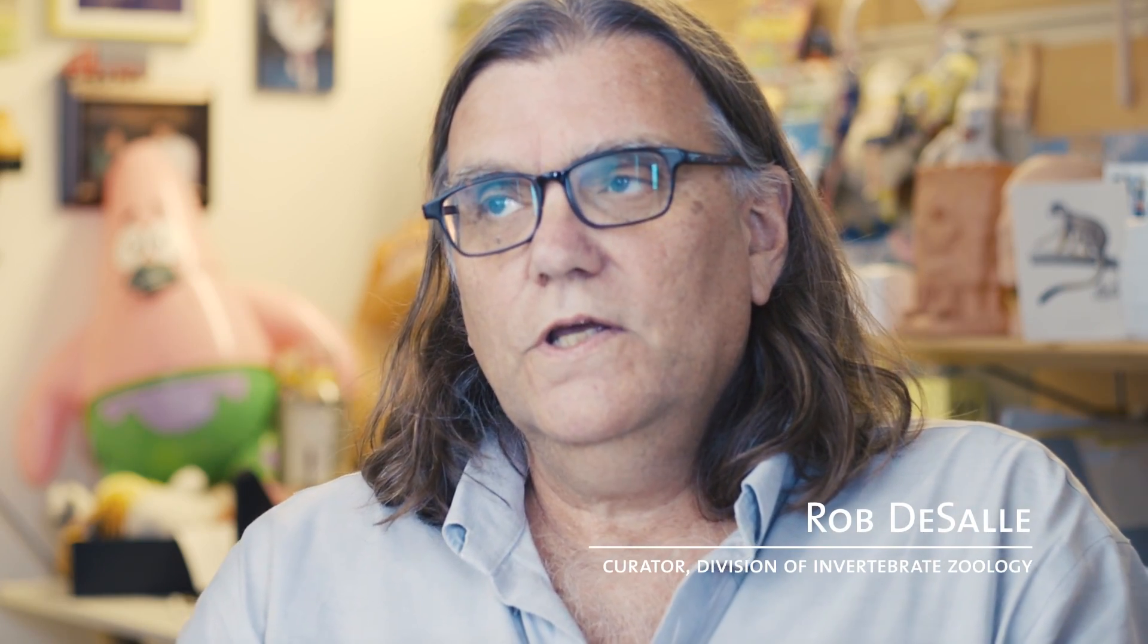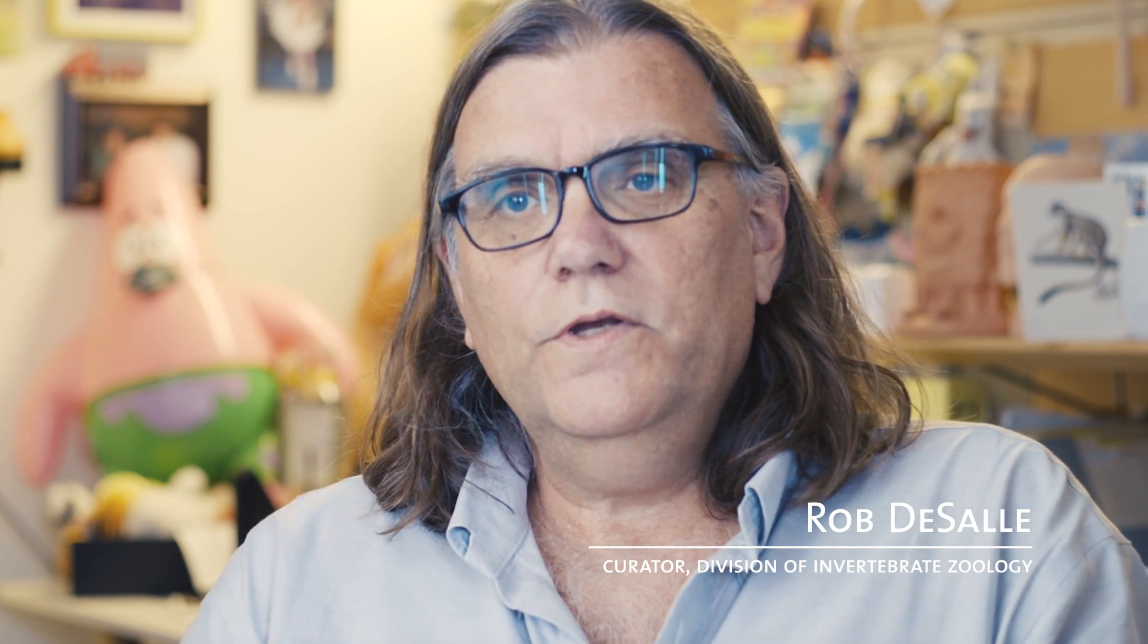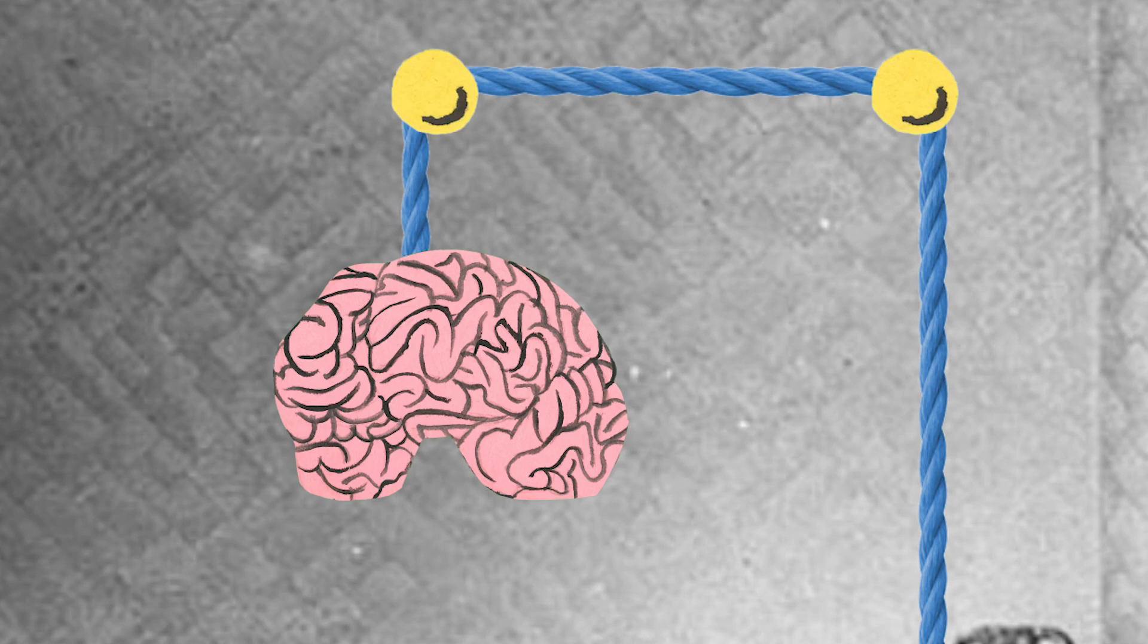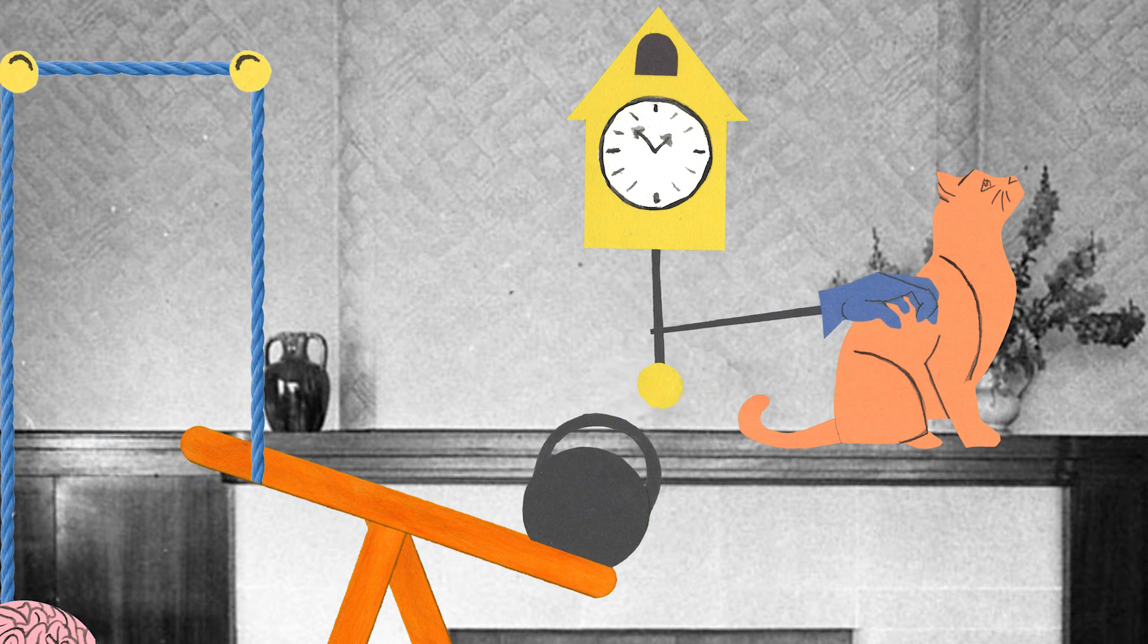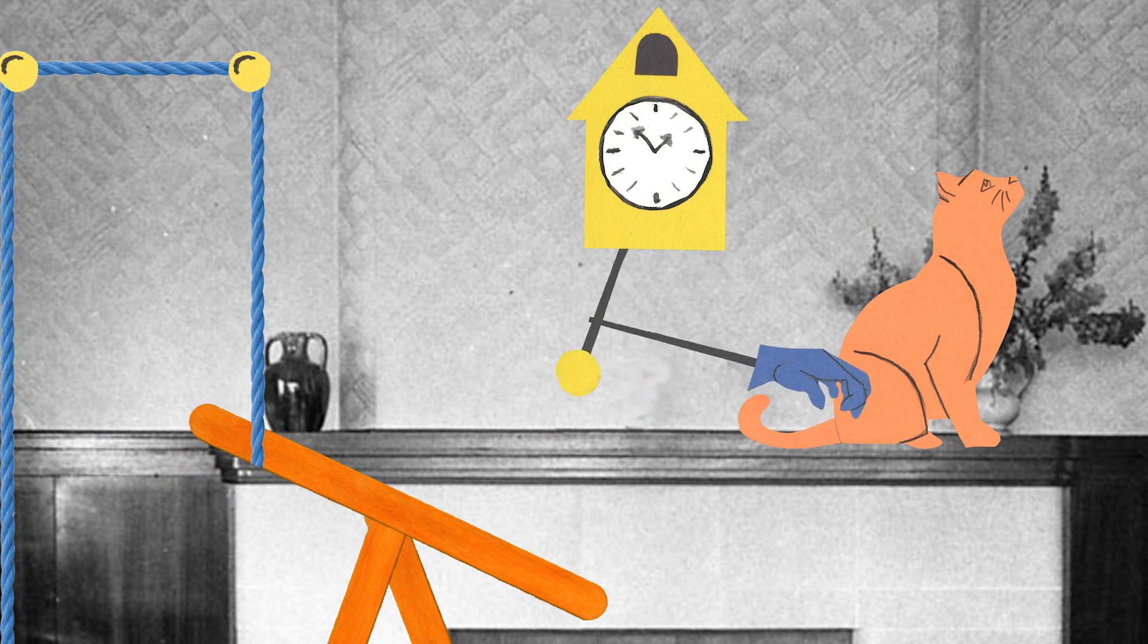The sense of touch is a very important one for how we deal with the environment. One of the larger parts of your sensory cortex in your brain is connected to your fingers and to your hands.